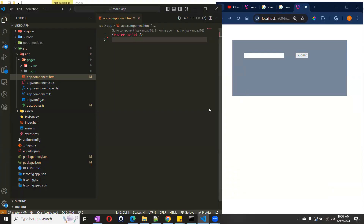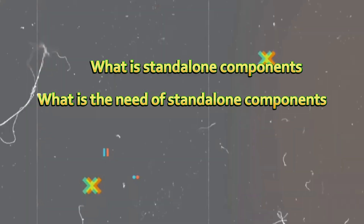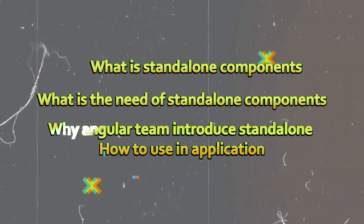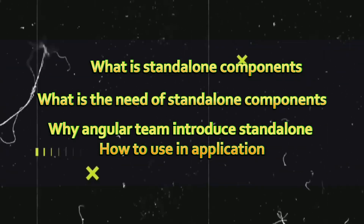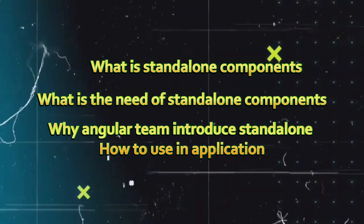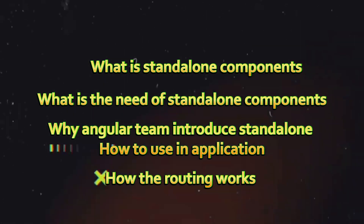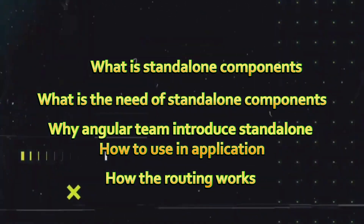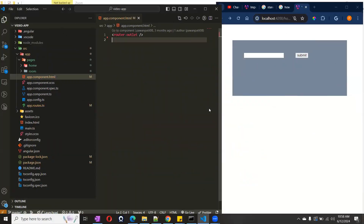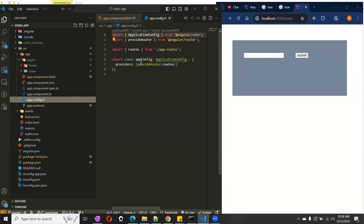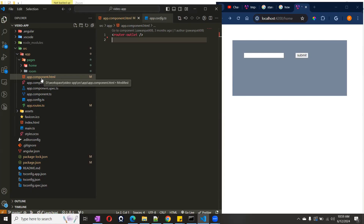Hi everyone, welcome back to the channel. In this video we are going to talk about what is a standalone component, what is the need of standalone components, why they have been introduced, and how we can use standalone components in the application. Also, if we are using standalone components, how routing will work, because we don't have modules now. Earlier we were using load modules, but now we don't have anything related to modules, so that's where things come in — how standalone components exactly work.